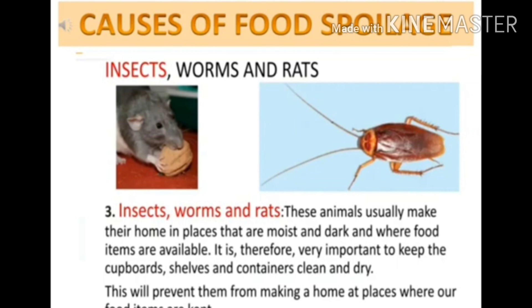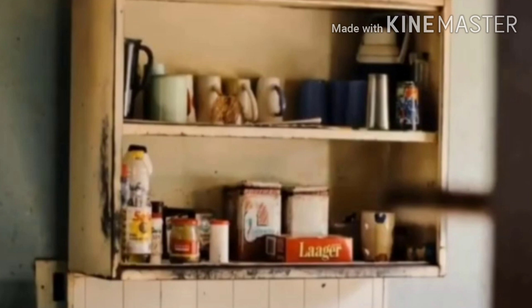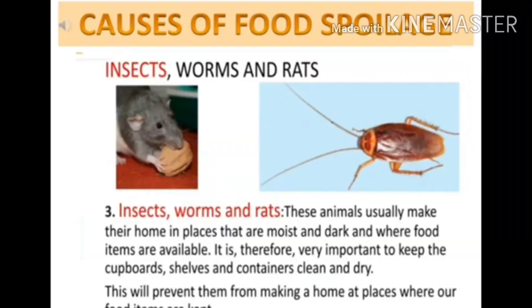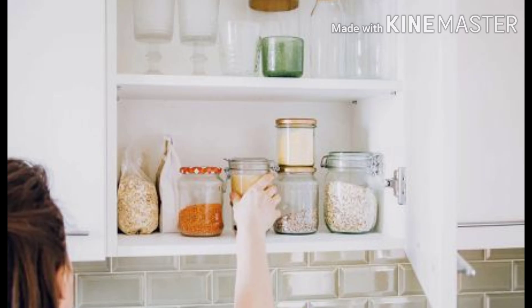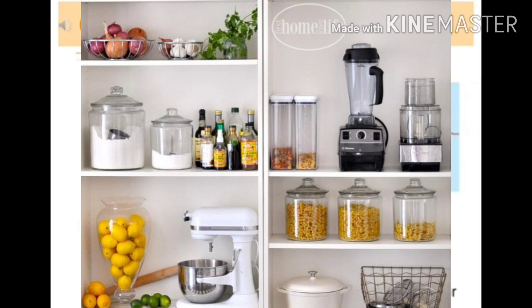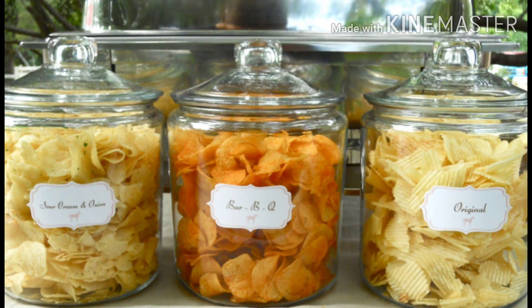The next reason for the spoilage of food is insects, swarms, and rats. These animals usually make their home in places that are moist and dark and where food items are available. To prevent this, if we keep our cupboards, shelves, and containers clean and dry, this will prevent them from making a home at places where our food items are kept.